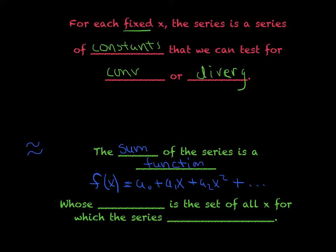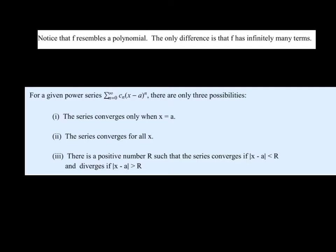Now, for that particular function, we would say whose domain is the set of all X for which the series converges. Basically, there's going to usually typically be a group of X values, an interval of X values that cause it to converge, otherwise it'll diverge. But we'll see there's basically three cases for interval of convergence here. Just a couple of more pointers here before we dive in. Just a quick notice, F resembles a polynomial. The only difference is it's a polynomial that has infinitely many terms, and that's where the magic is.